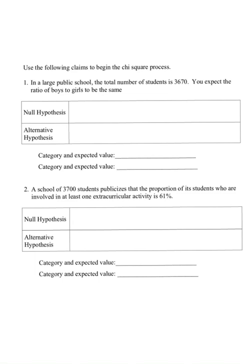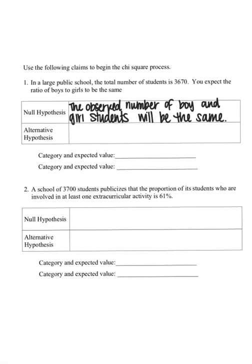So this first question states, in a large public school, the total number of students is 3,670. You expect the ratio of boys to girls to be the same. So my null hypothesis would be that the observed number of male and female students would be the same. Remember, chi-squares allow for a reasonable amount of randomness, so our null hypothesis states that the number of boys and girls will be the same.